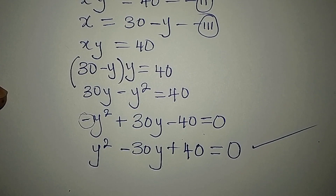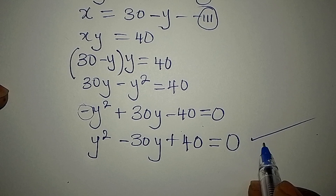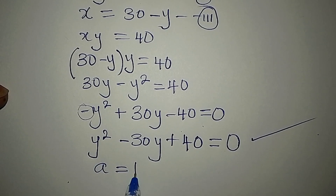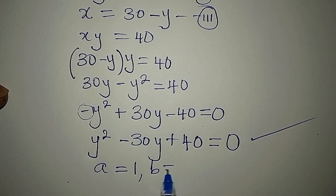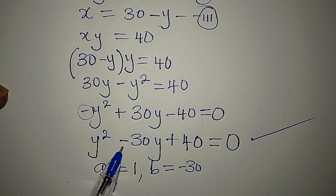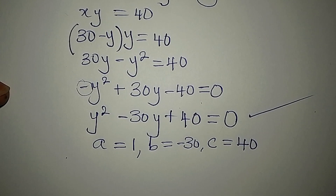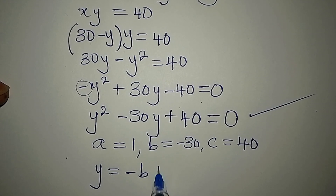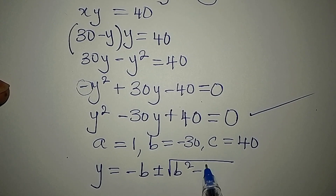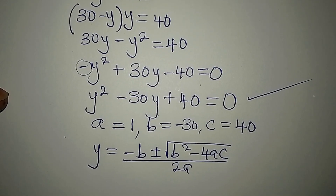Before I proceed, have you subscribed to my channel? If you have not subscribed, subscribe so you can have access to more of my videos. Now, the quadratic formula has a, which is 1 — the coefficient of y squared. Then we have b, which is minus 30. If you leave out the sign, you will be wrong. Then we have c, which is positive 40. The formula is: y equals negative b plus or minus square root of b squared minus 4ac, all over 2a. This is called the quadratic general formula.